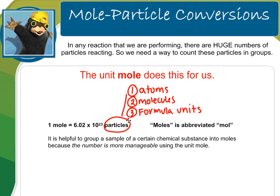These are three very important conversion factors we're going to use in our problems. One mole equals 6.02 times 10 to the 23rd atoms, molecules, and formula units. Notice that 6.02 times 10 to the 23rd is a huge number. It is helpful to group a chemical substance into moles because the number is more manageable using the unit mole, as opposed to using atoms, molecules, or formula units.